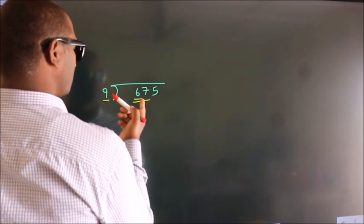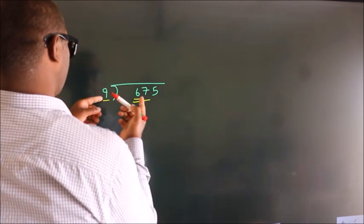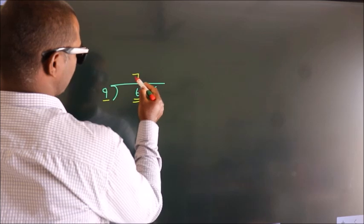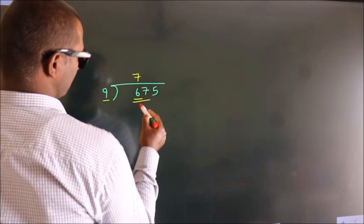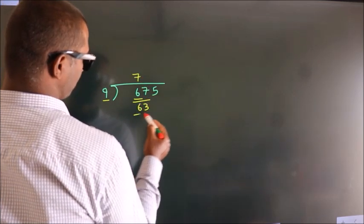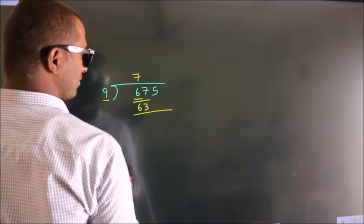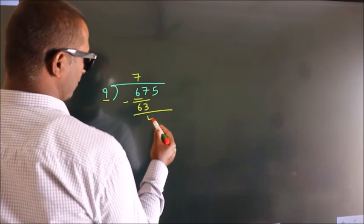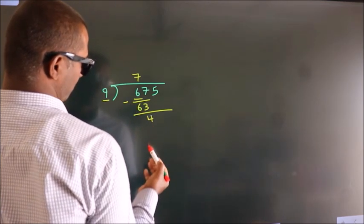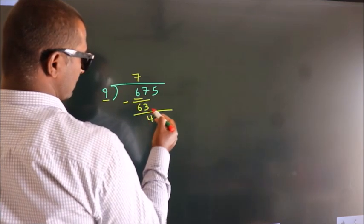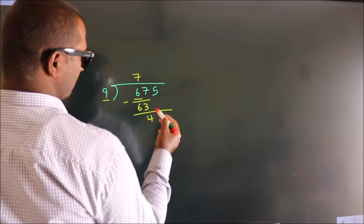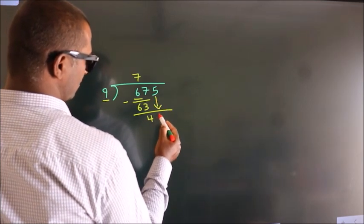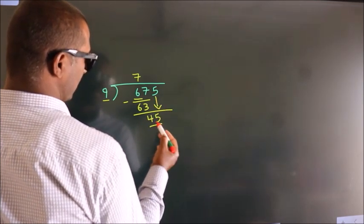A number close to 67 in the 9 times table is 9 sevens, which is 63. Now we subtract, and we get 4. After this, bring down the beside number — so 5 comes down, giving us 45.